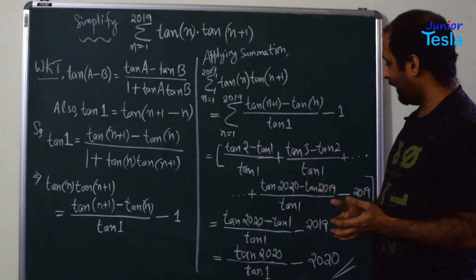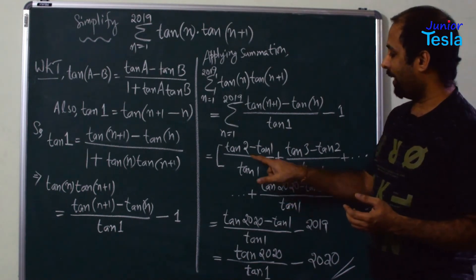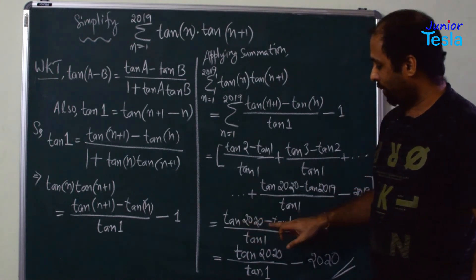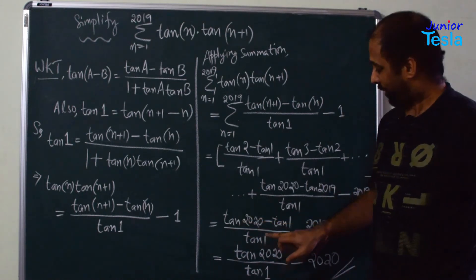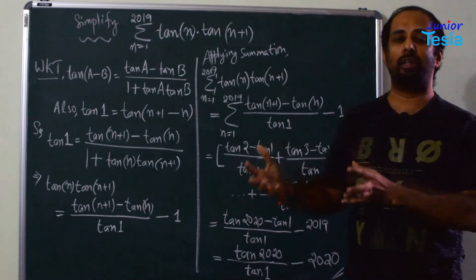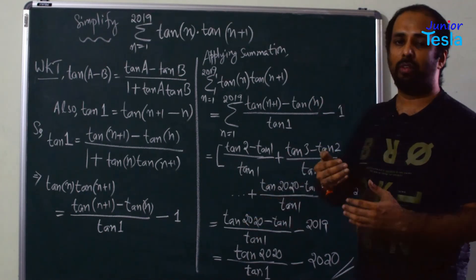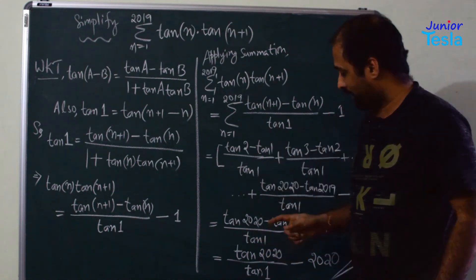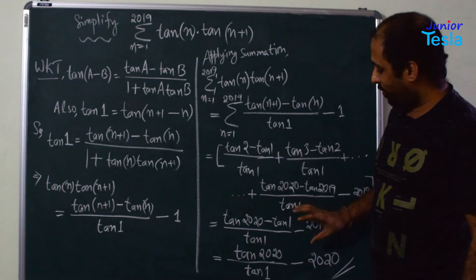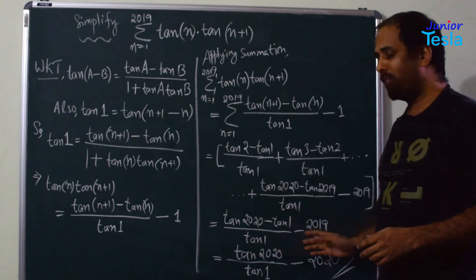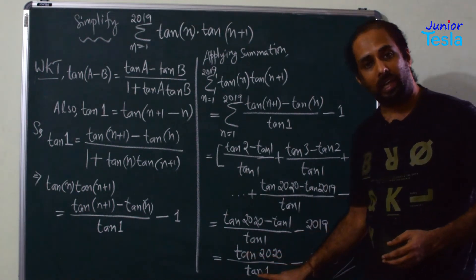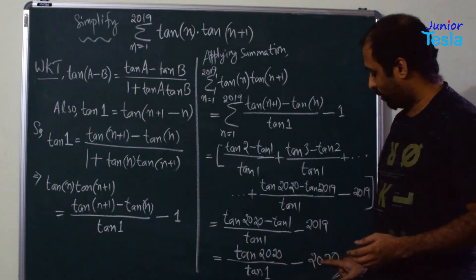Finally, we are left with tan(2020) and −tan(1). So the numerator becomes tan(2020) − tan(1) over tan(1), and the −1 appears 2019 times, giving −2019. Simplifying by taking tan(1) as the common denominator, the final answer is tan(2020) / tan(1) − 2020.